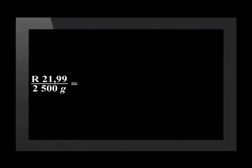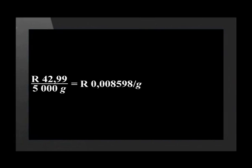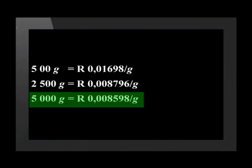Now let's look at the 2.5 kilogram bag. 21 rand 99 divided by 2,500 grams equals 0.008796 rand per gram — just under 1 cent per gram. This means the flour in the 2.5 kilogram bag is cheaper than the 500 gram bag. Now for the 5 kilogram bag: 42 rand 99 divided by 5,000 grams is 0.008598 rand per gram, also just under 1 cent per gram. Looking at all answers together, the 5 kilogram bag is the best value for money. Flour can be kept for quite a while before it goes off, so it's a good idea to buy the 5 kilogram bag.